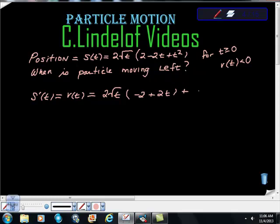The derivative of the first piece plus (2-2t+t²) times the derivative of this. The derivative of this is t^(-1/2).